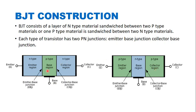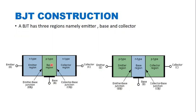A PNP transistor is formed when one n-type material is sandwiched between two p-type materials. As you can see in this diagram, the transistor has two junctions. The junction between the emitter and base region is called the emitter-base junction, and the junction between the base region and collector region is called the collector-base junction. Both NPN and PNP transistors have two junctions.